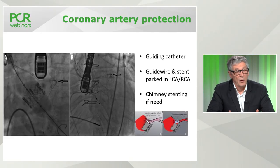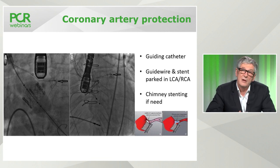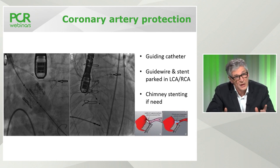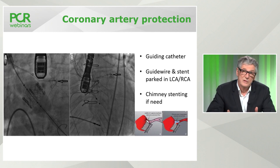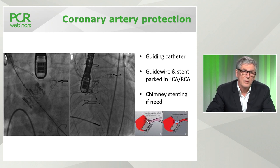The chimney stent technique is particularly needed with the CoreValve Evolut-R, which is a supraannular valve — if you put a stent, the upper part must be proximal to the leaflets. Usually we park a long stent in the left main and deploy it when necessary. It's not always necessary to deploy it, but in approximately two-thirds of cases where we anticipate a big risk of occlusion, the stent should be deployed.